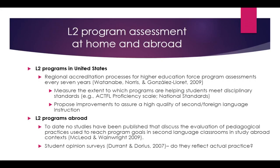There are regional accreditation processes for higher education in the U.S. that force program assessment every seven years, at least. They're supposed to measure the extent to which programs meet the outcomes and goals of those programs, either based on the actual proficiency scale, national standards, et cetera. The purpose of those reviews is also to propose improvements to assure a high quality of second and foreign language instruction.